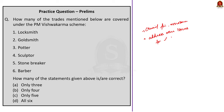PM Vishwakarma scheme has the potential to provide crucial financial assistance and skill development to traditional artisans. But the scheme's success in creating actual positive impact depends on addressing deeper challenges beyond credit availability, like increasing market access, valuation, and economic viability. With these learned points, let us take up the next news article for our analysis.